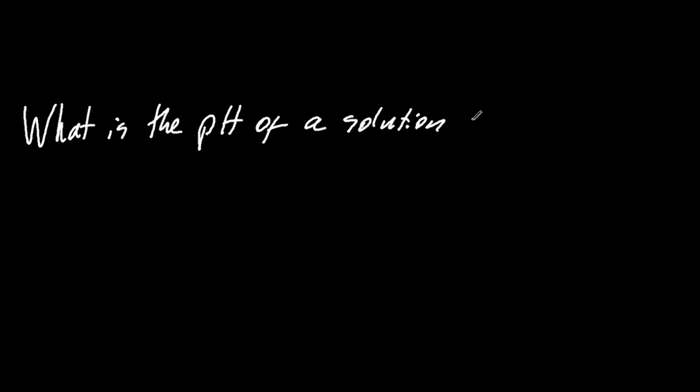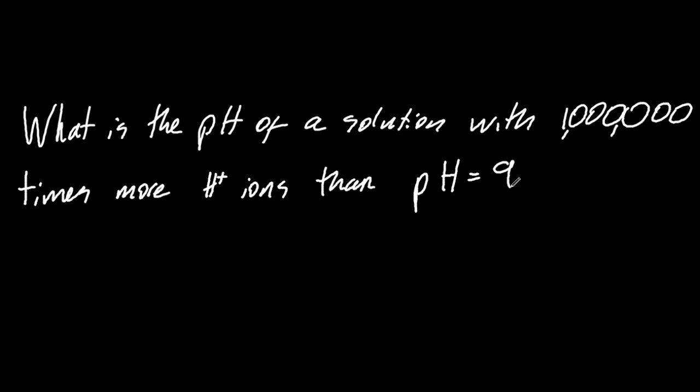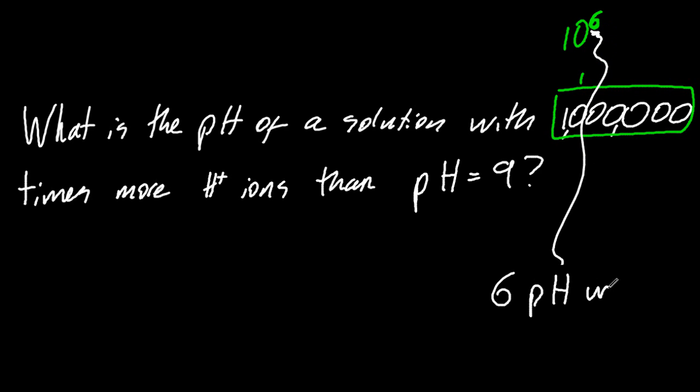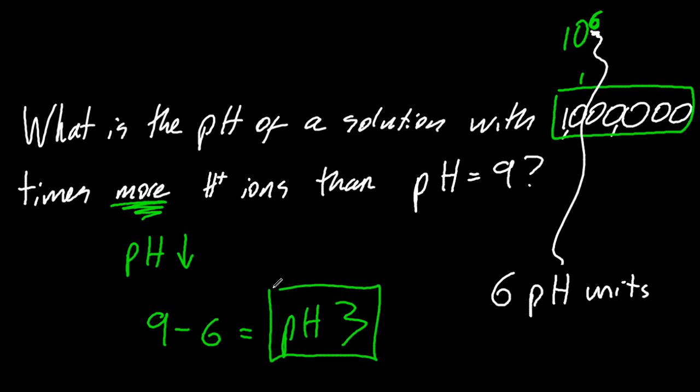It's changed by a factor of 100. So what's the pH of a solution with a million times more H plus ions than pH 9? Well, a million times, using this logarithmic scale, that's 10 to the 6. So it's a pH jump of 6. So I've got to make it more concentrated. So I'm going to take off 6. That gives me pH 3.